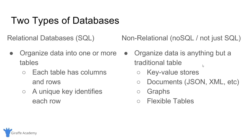A relational database is a lot like an Excel spreadsheet — columns and rows storing information. Non-relational databases are basically any type of database that's not relational. Because relational databases are so popular, any other type gets referred to as non-relational. Non-relational databases organize data in anything but a traditional table — things like key-value stores, documents like JSON or XML, graphs, or flexible tables. Really, non-relational databases is a very general category — it's just anything that's not relational.